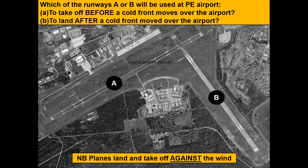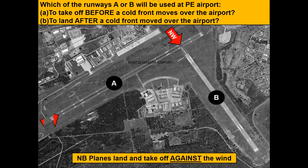Another question: which of the runways A or B will be used at PE Airport — which for take-off before a cold front moves over the airport, and which for landing after a cold front? To answer this, note that planes land and take off against the wind, both before and after a cold front moves over the airport.